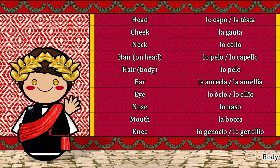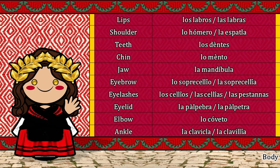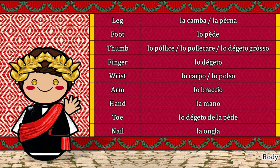Body parts: Lo capo. La testa. La gauta. Lo collo. Lo pelo. Lo capello. La orecla. La orelia. Lo oculo. Lo óleo. Lo naso. La boca. Lo genoclo. Lo genollo. Los labros. Las labras. Lo hómero. La espalda. Los dentes. Lo mento. La mandíbula. Lo soprachello. La soprachella. Los chellos. Las chellas. Las pestanas. La palpebra. La palpetra. Lo coveto. La clavicla. La claviglia. La camba. La perna. Lo pède. Lo pollice. Lo pollicare. Lo degeto grosso. Lo degeto. Lo carpo. Lo polso. Lo braccio. La mano. Lo dègeto de la pède. La ongla.